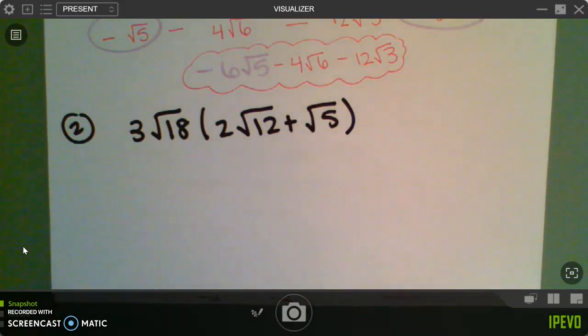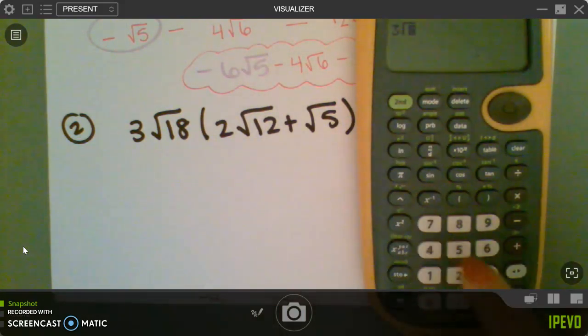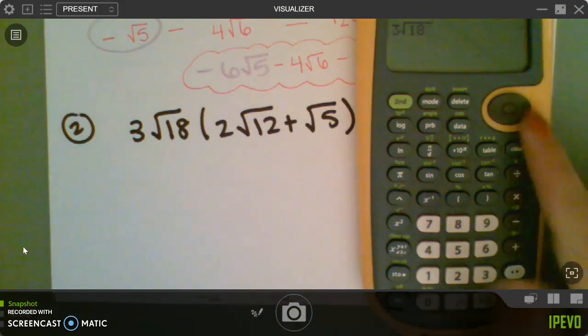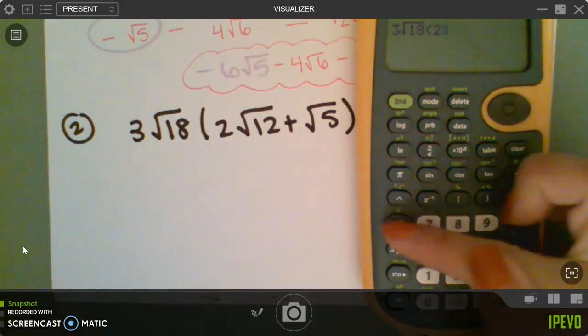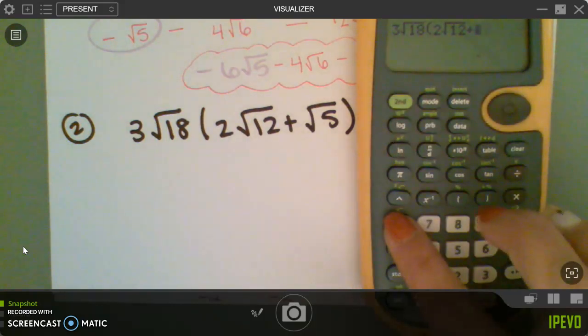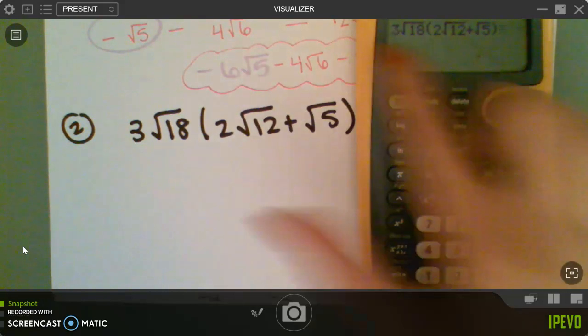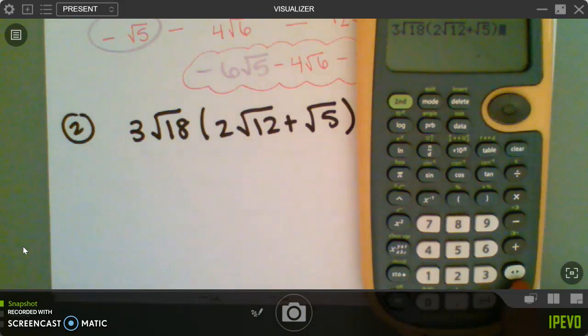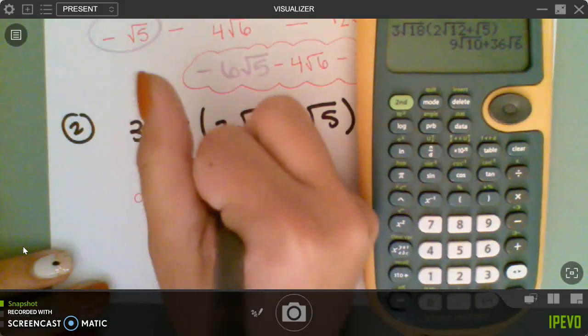So to type this one in, we are going to do a 3, square root. Remember, you press the x squared button, 18, and it's still under the root, so you have to arrow to the right to get outside of it. Parentheses, 2, second, x squared again to get my root 12, arrow to the right, plus. Again, second, x squared to get my root 5, arrow to the right, parenthesis. Now what's on my screen looks exactly what's on my paper. So let's press enter, and that's our final answer. So our final answer with just using the calculator to solve this is 9 square root of 10 plus 36 root 6.